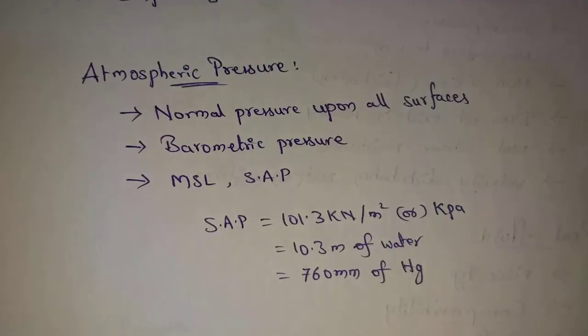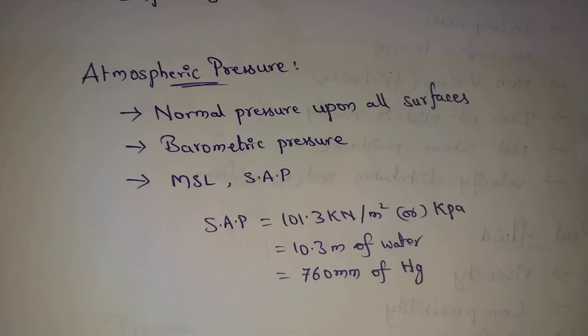Next topic: atmospheric pressure. The atmospheric air exerts a normal pressure upon all surfaces with which it is in contact, and this is known as atmospheric pressure. This atmospheric pressure is also known as barometric pressure.